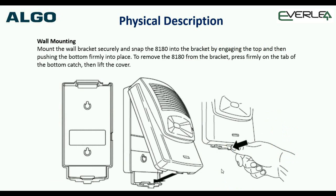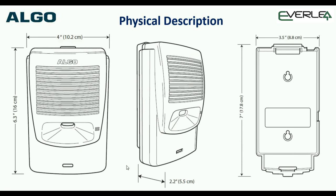When mounting, it comes with its own bracket. The bracket screws to the wall with two screws. Connect the network cable, put it in the top, drop it down, and it clicks and locks nicely into the bracket. The physical dimensions are not a huge footprint — 16 centimeters high by 10 centimeters wide and 5.5 centimeters at the widest point.